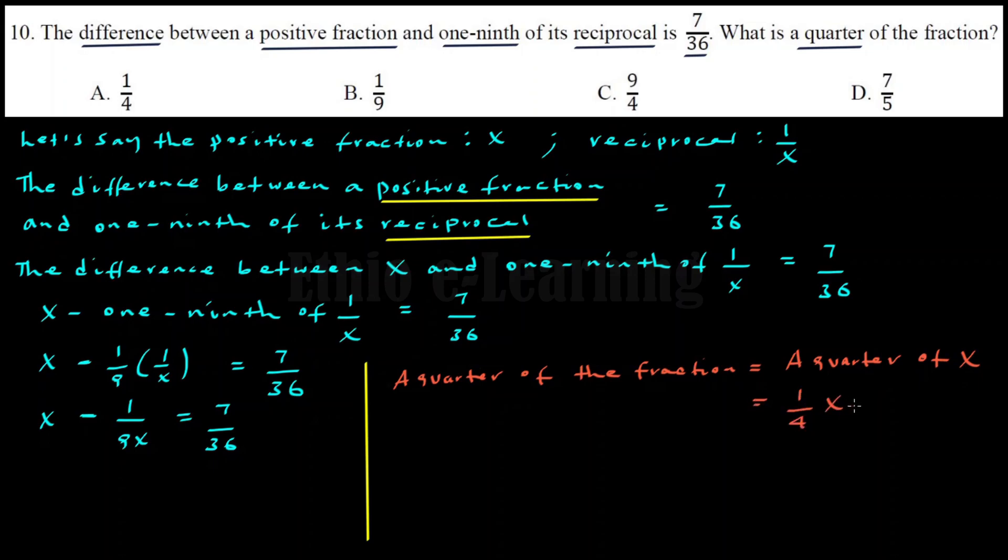So we need to find x. If we cross-multiply and rearrange this equation, we get 36x squared minus 7x minus 4 equals 0.